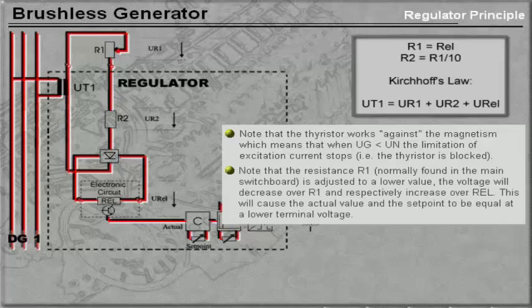Note that if the resistance R1 is adjusted to a lower value, the voltage will decrease over R1 and respectively increase over REL. This will cause the actual value and the set point to be equal at a lower terminal voltage.